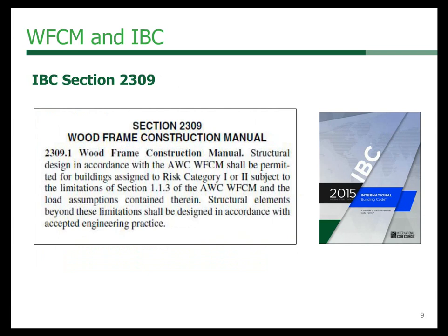Section 2309.1 states that if you are using the Wood Frame Construction Manual for an IBC building design, it needs to be a Risk Category 1 or 2 building, as highlighted here. If you are going beyond that, it would be beyond the scope of the standard and you would need to use alternative methods. For Risk Category 1 or 2 smaller structures, you would be able to use the Wood Frame Construction Manual for non-residential design.